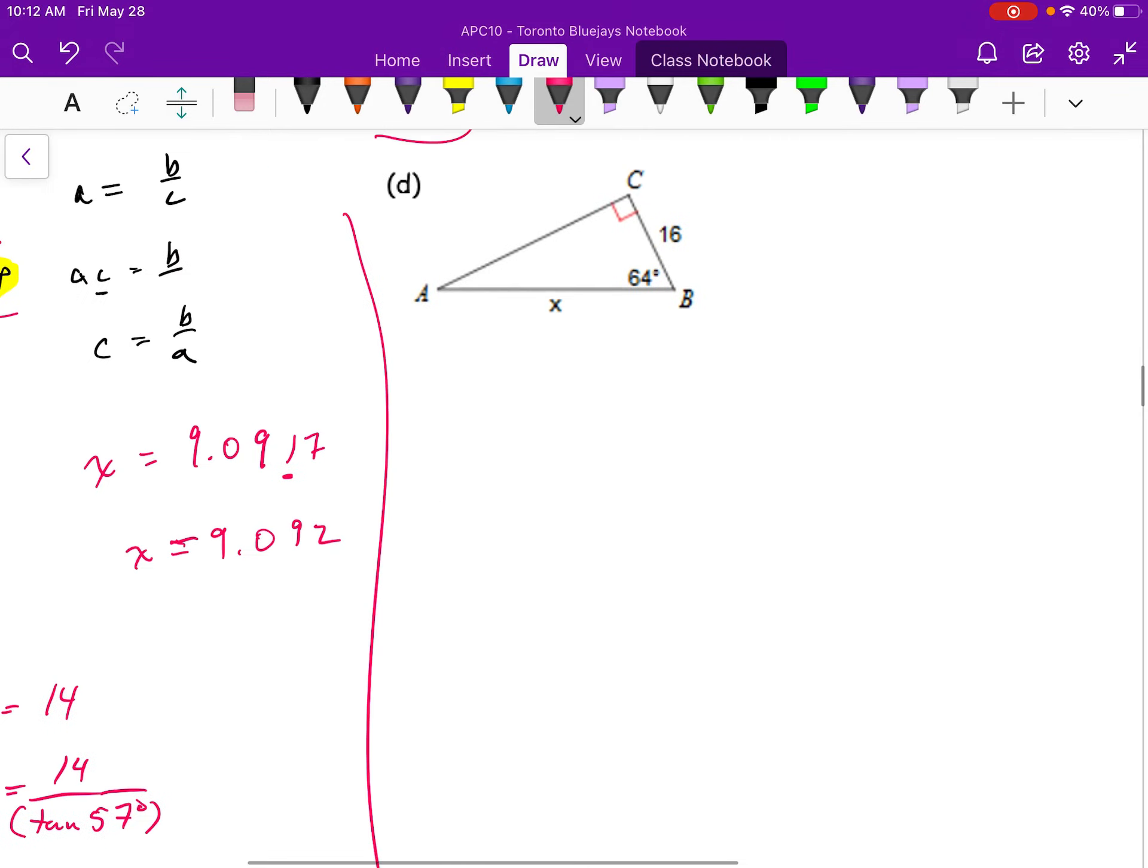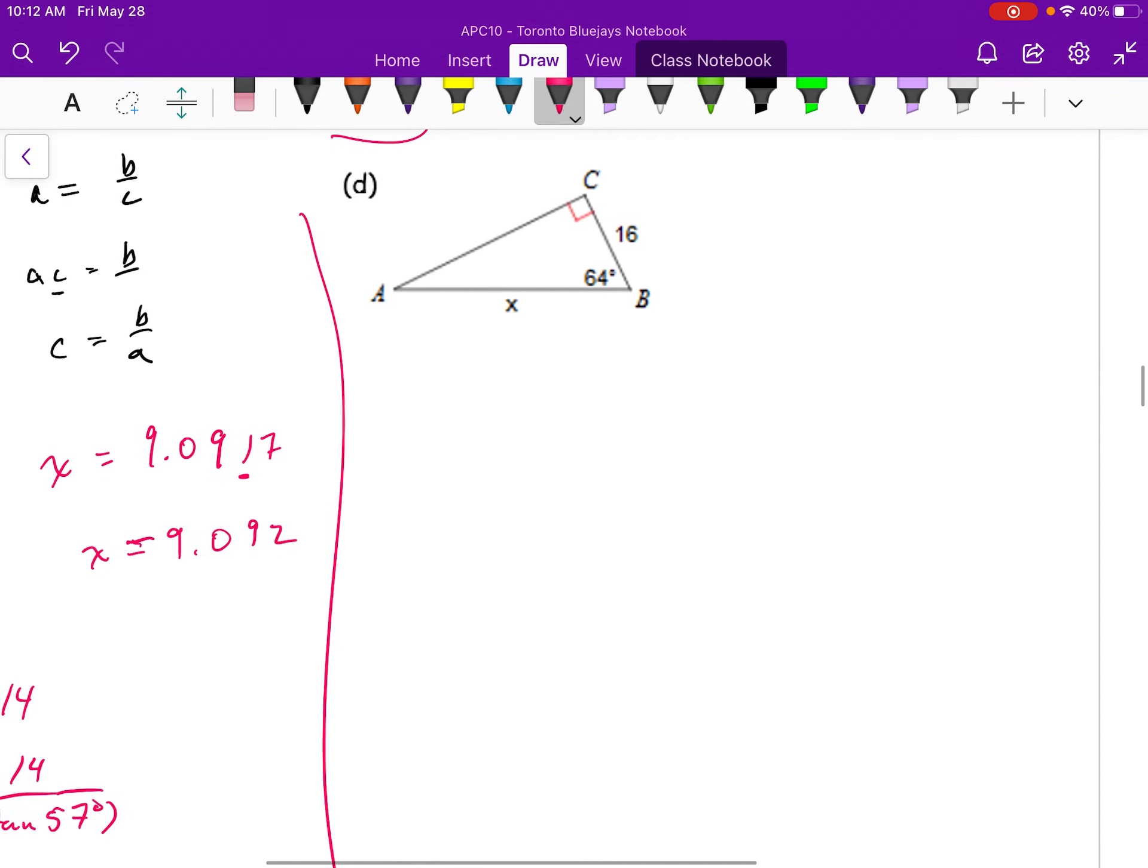Last but not least, this question here. So first order of business, I would call this theta. Next order of business, I would label my triangle, hypotenuse, and the adjacent.